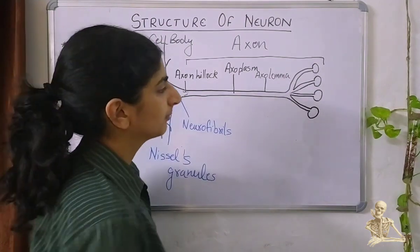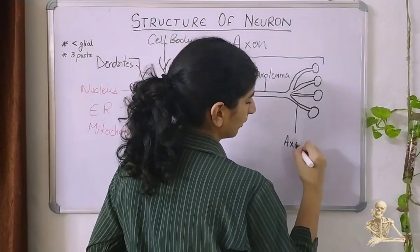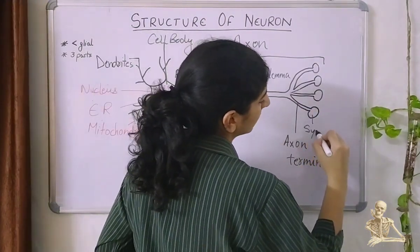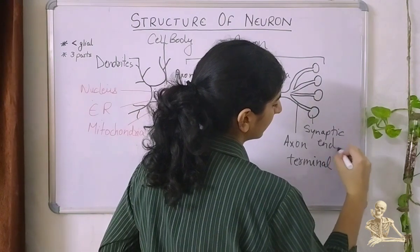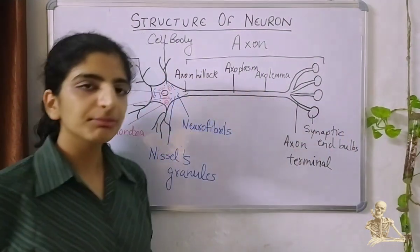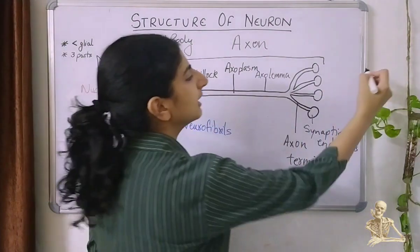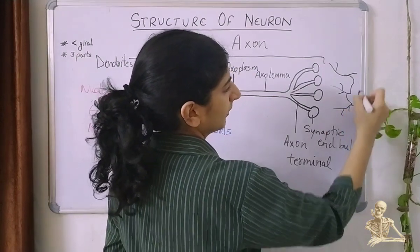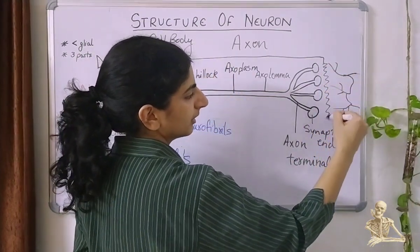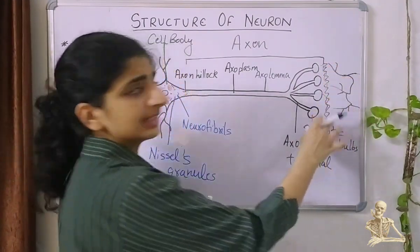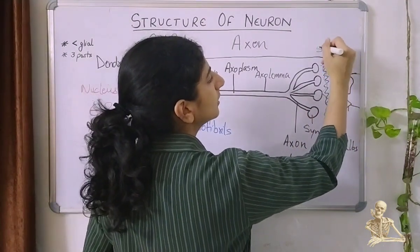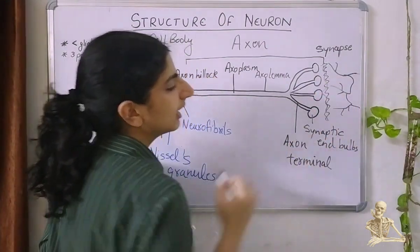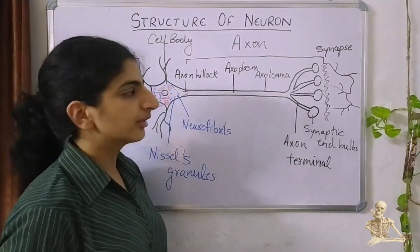Coming to the end of the axon, this region here is the axon terminal, and these bulb-like structures are synaptic end bulbs. They are called synaptic end bulbs because of the gap between this axon and the dendrite of the next neuron — this gap is known as the synapse. These bulb-like structures are where a neurotransmitter is stored.